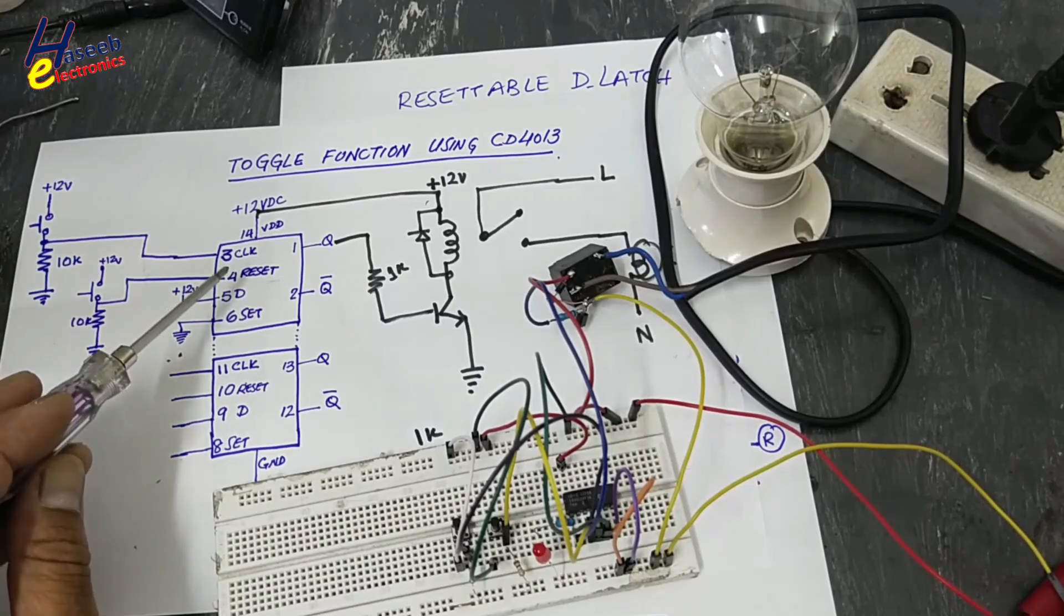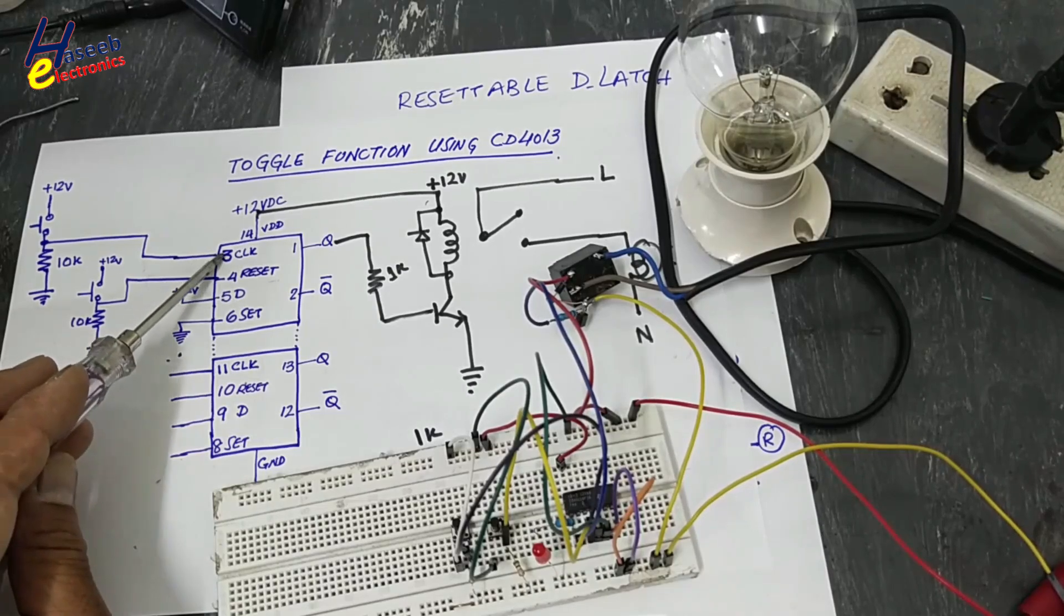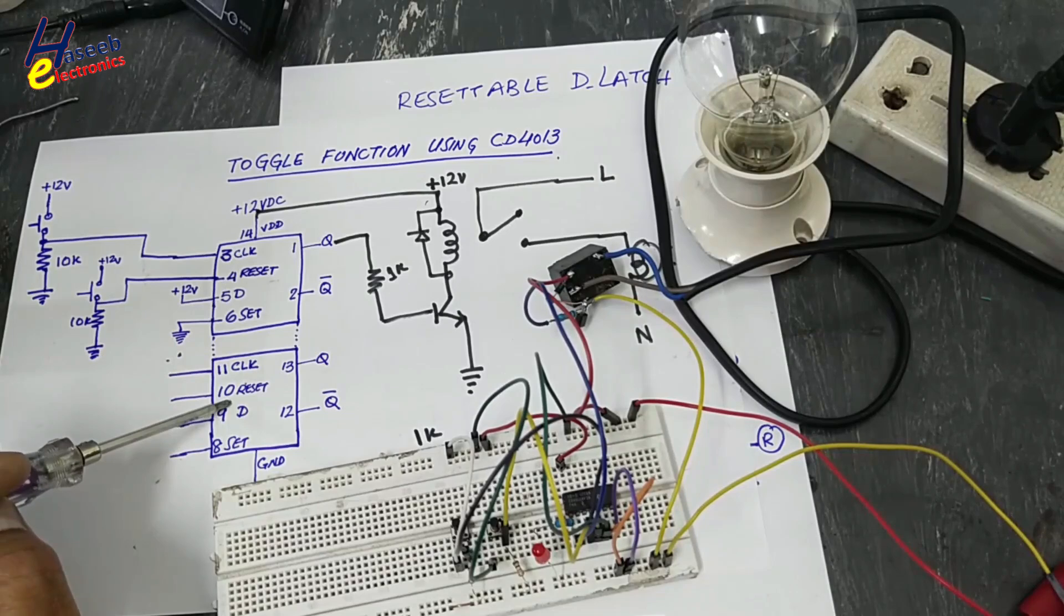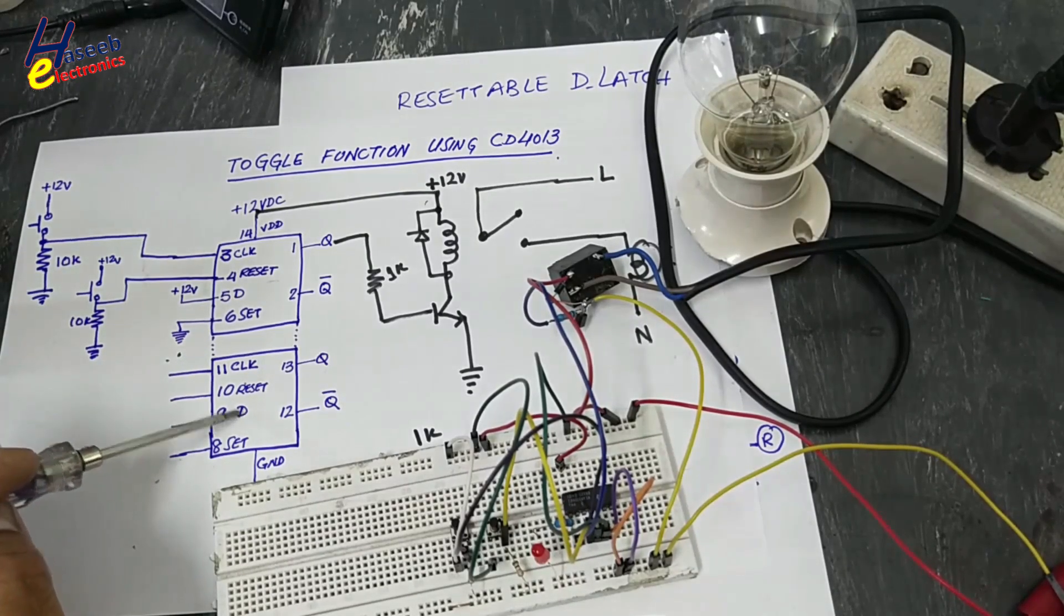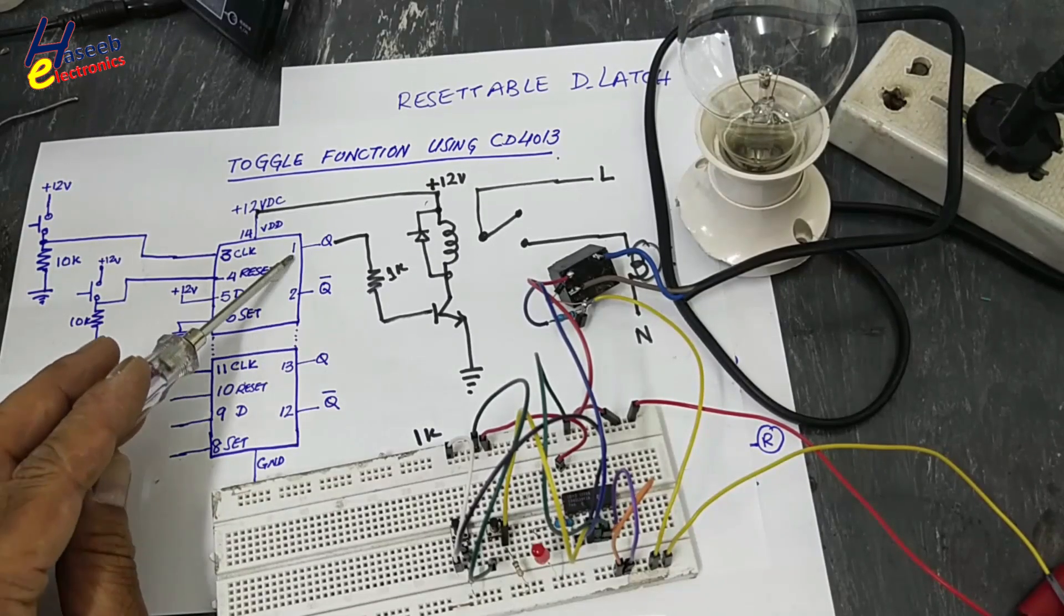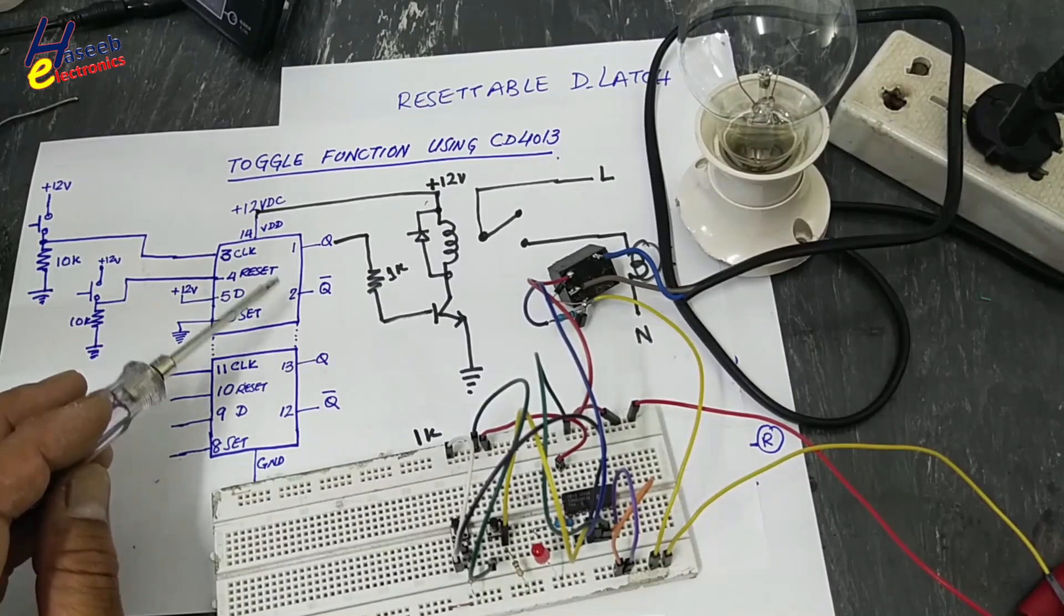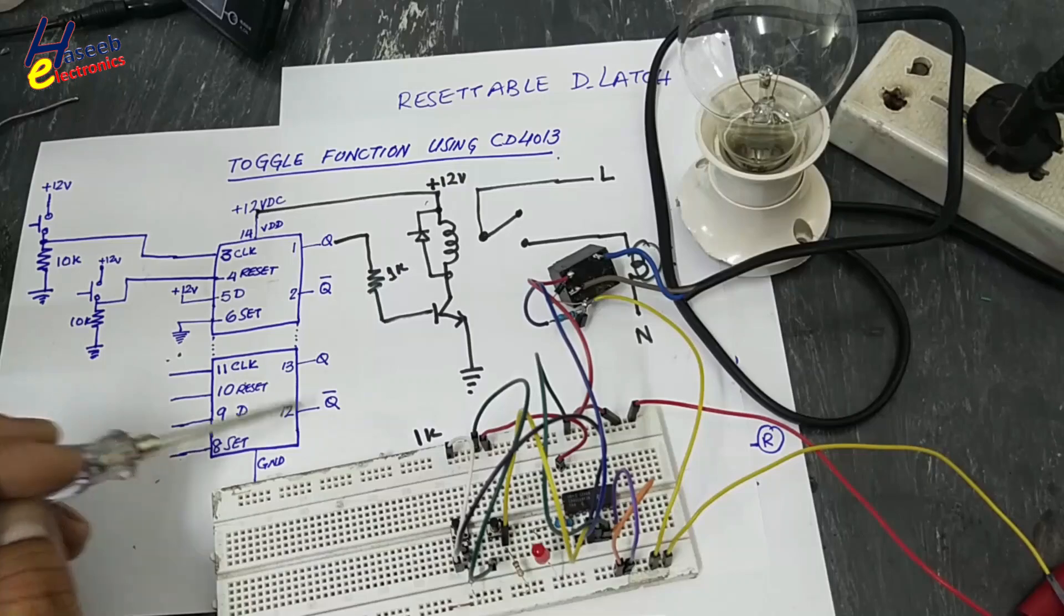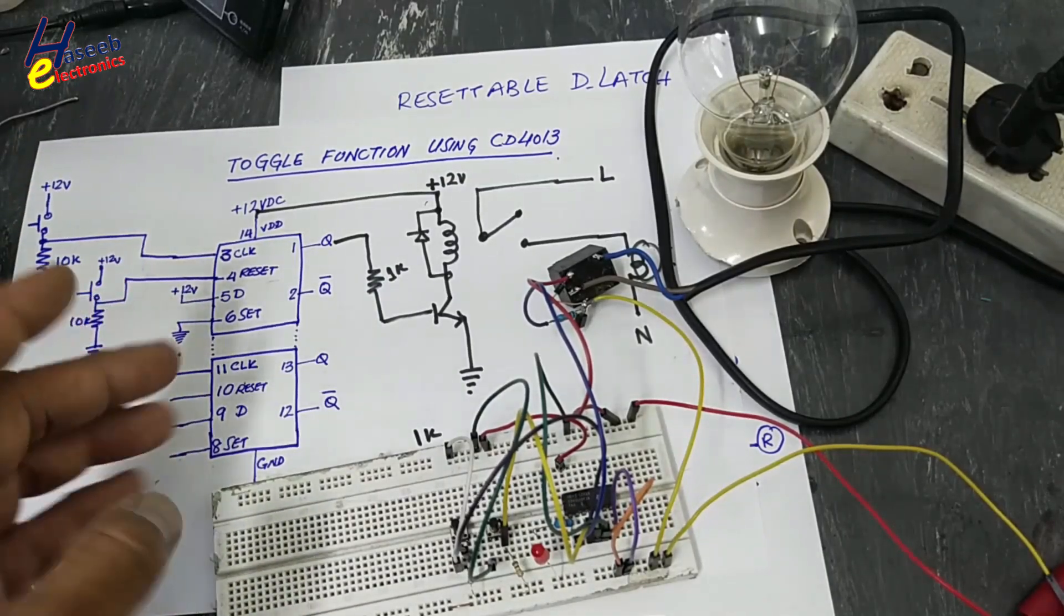We used one portion of this IC. We can also utilize the second switch as well because it is a dual D-latch. The same - pin 3 clock here, pin 11 clock, pin 4 reset here, pin 10 reset, pin 5 D here, pin 9 D, pin 6 set, pin 8 set, pin 1 Q output, pin 13 Q output, pin 2 Q bar, pin 12 Q bar. We can use this section and utilize both sections.